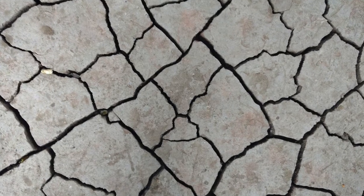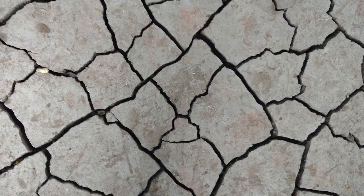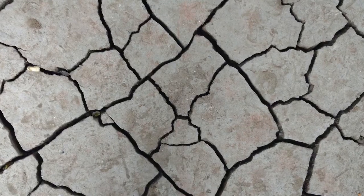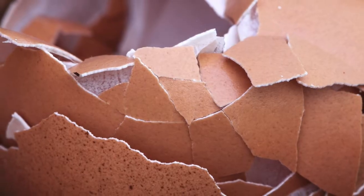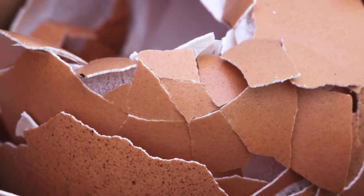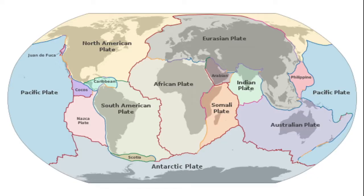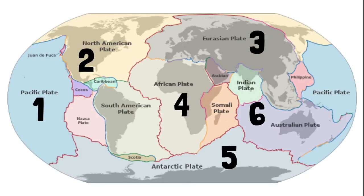The lithosphere is not one solid layer. It's broken into pieces, like the shell of an egg when you drop it. These pieces are called tectonic plates. There are eight major tectonic plates under the Earth's crust, and also many minor or smaller plates.